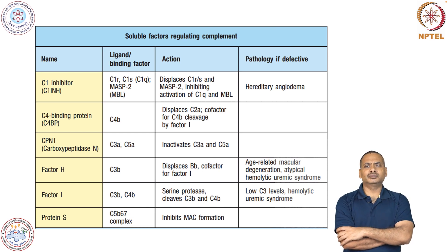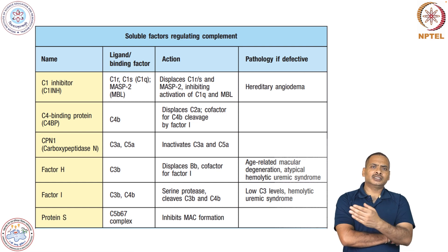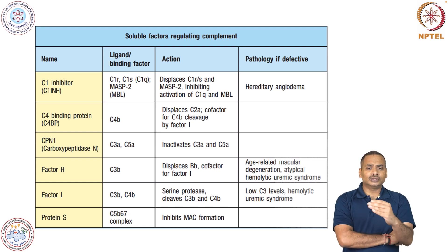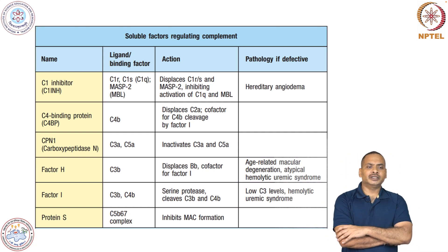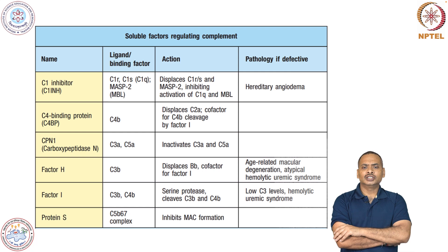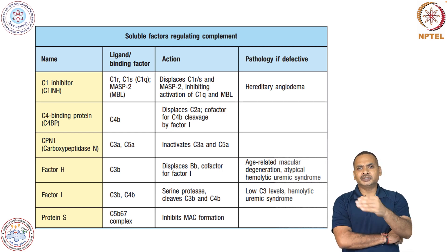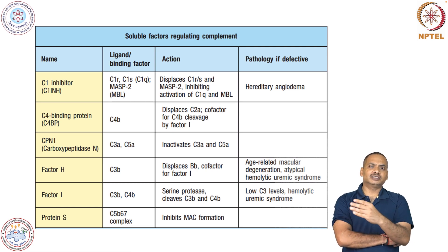Factor I interacts with C3b and C4b — both important constituents of C3 convertase. Being a serine protease, factor I cleaves C3b and C4b. Deficiency of factor I results in low levels of C3, which can also cause hemolytic uremic syndrome. Another molecule is protein S, which interacts with the C5b67 complex and is involved in inhibiting MAC formation. These are all the soluble factors regulating complement.